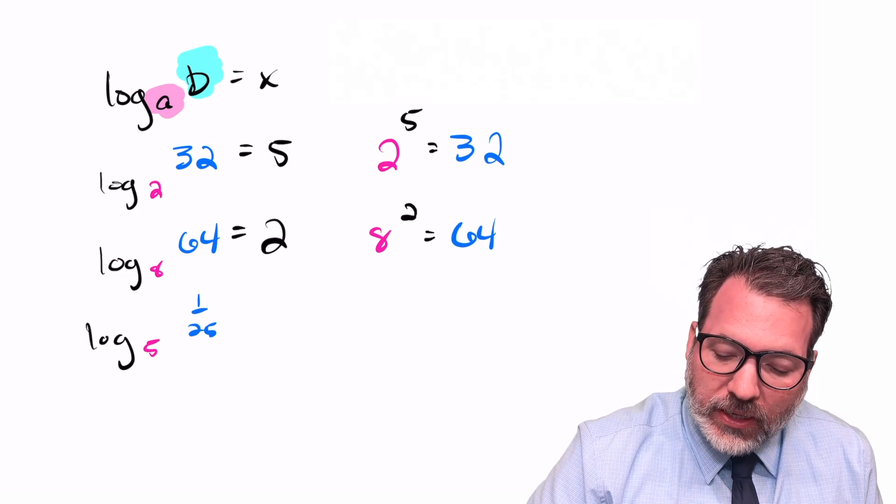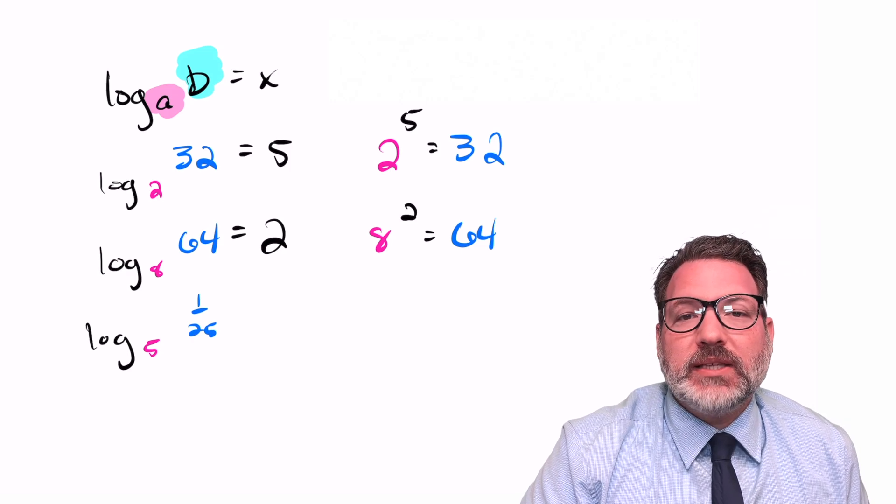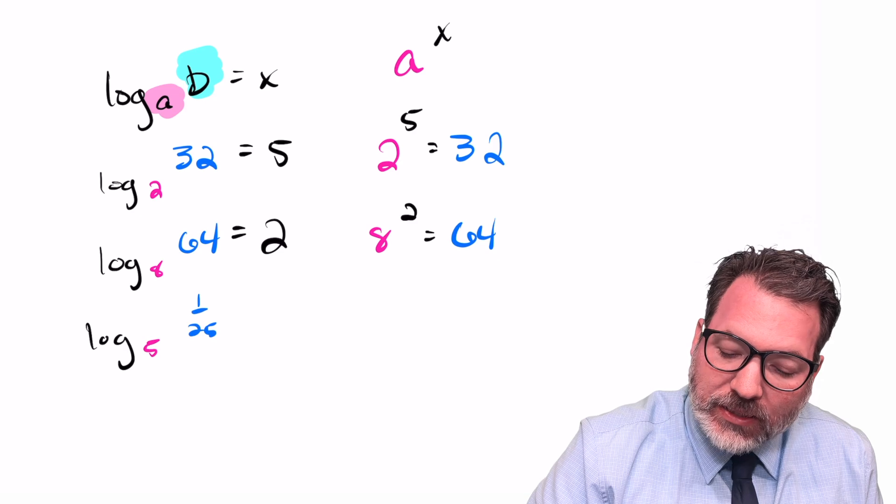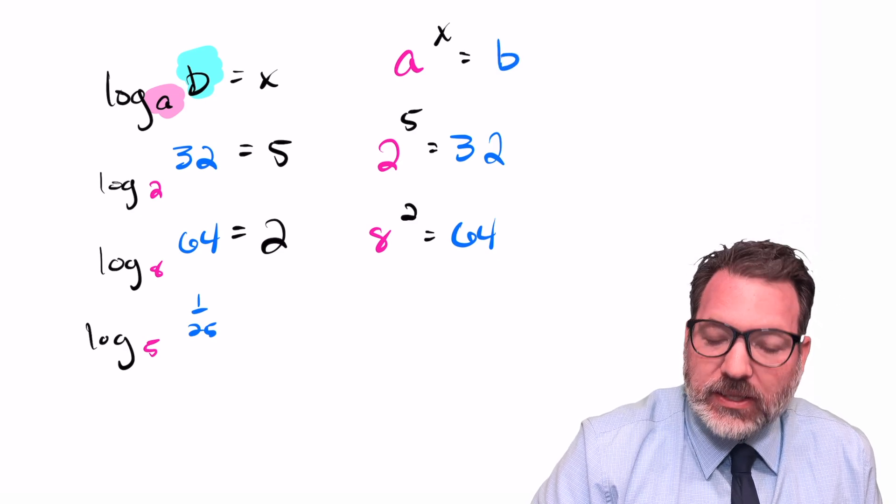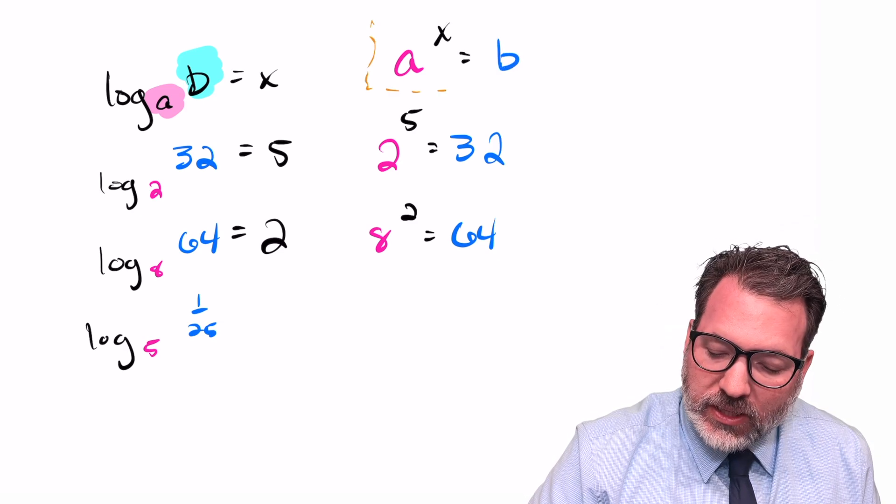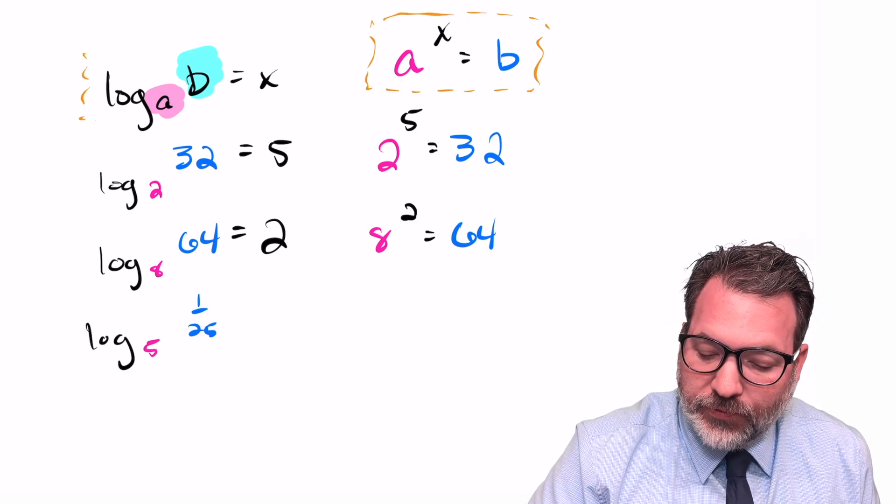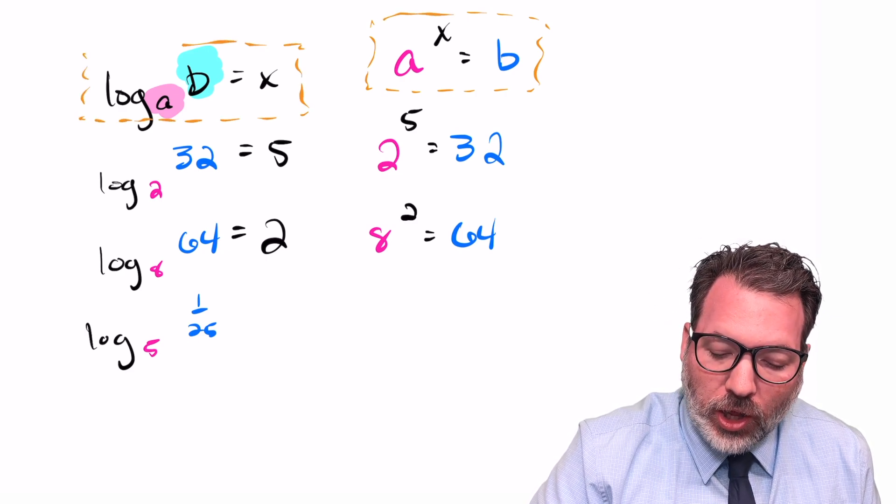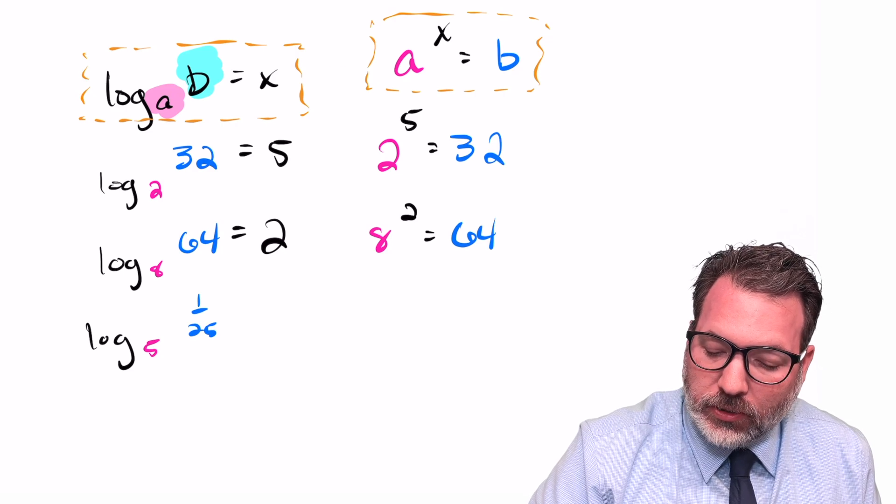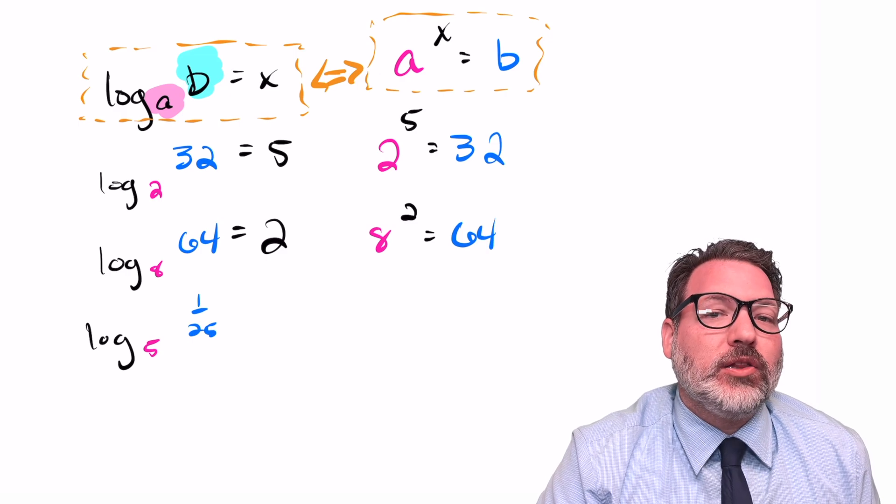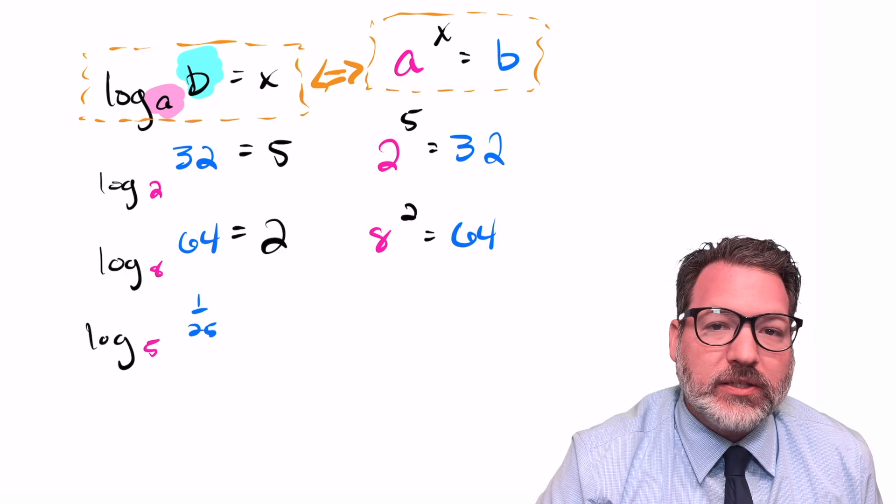In fact, what we're seeing is that the logarithm is really just a different way to write an exponential expression. We can put this in general form, that log base a of b is x. That's actually just another way of writing that a to the x power is equal to b. This is the more familiar exponential form of the expression, but this form here is the equivalent logarithmic form of the expression. And so importantly, if I can write the exponential expression, I can also write the logarithmic expression and vice versa.